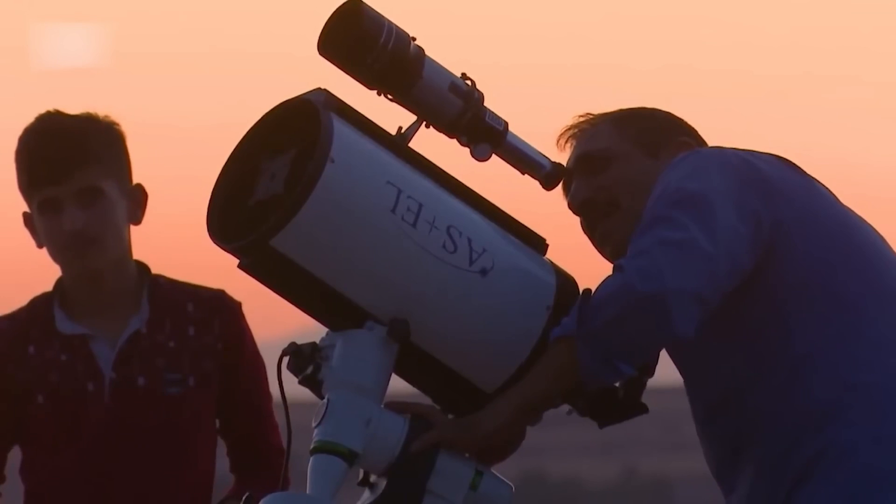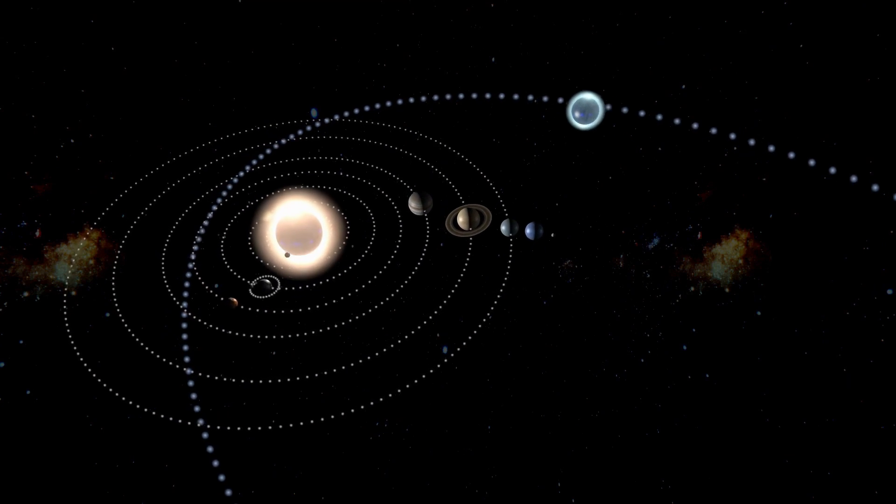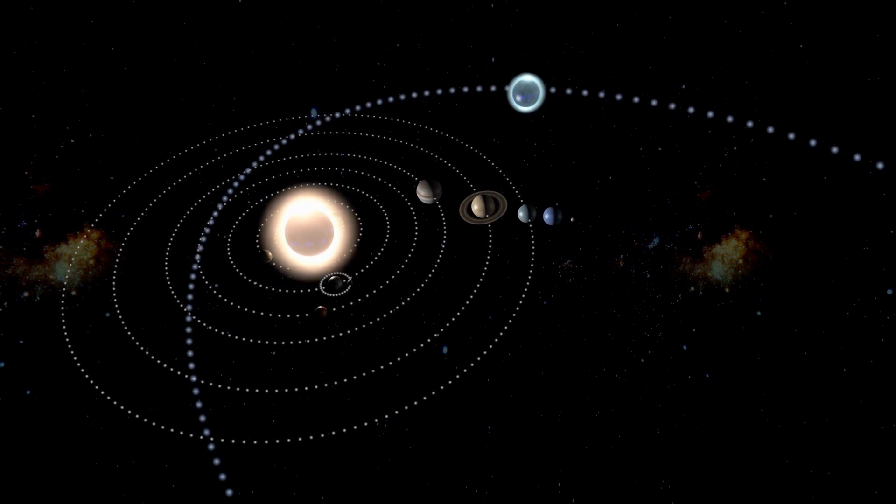Now, as 3i Atlas glided past Mars and NASA went dark, the old suspicions found new oxygen. For weeks, the agency's data repositories remained still. The European Space Agency broke the silence with a single, low-contrast image from its ExoMars trace gas orbiter—a grainy dot against black space.